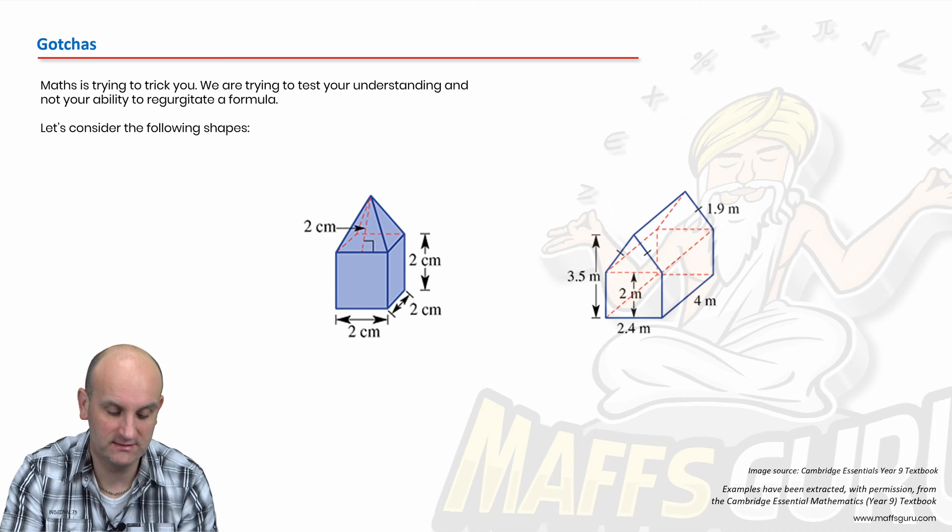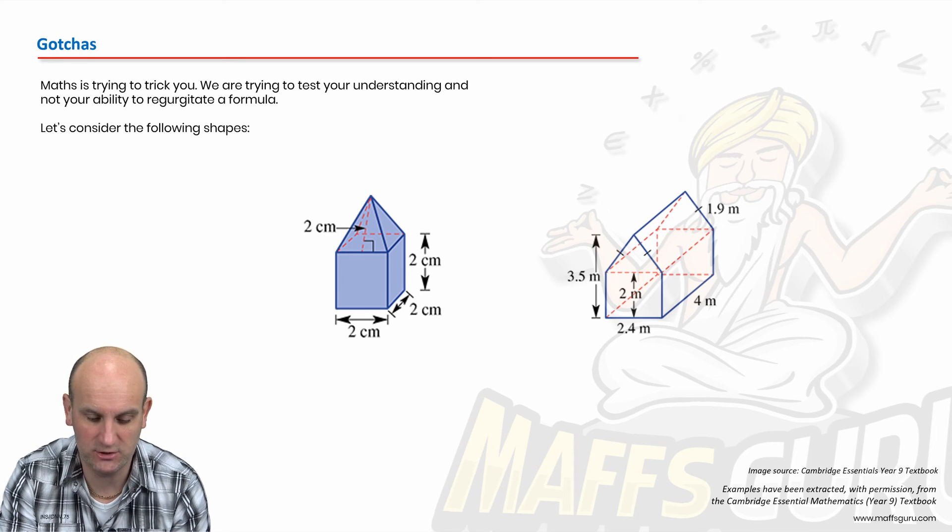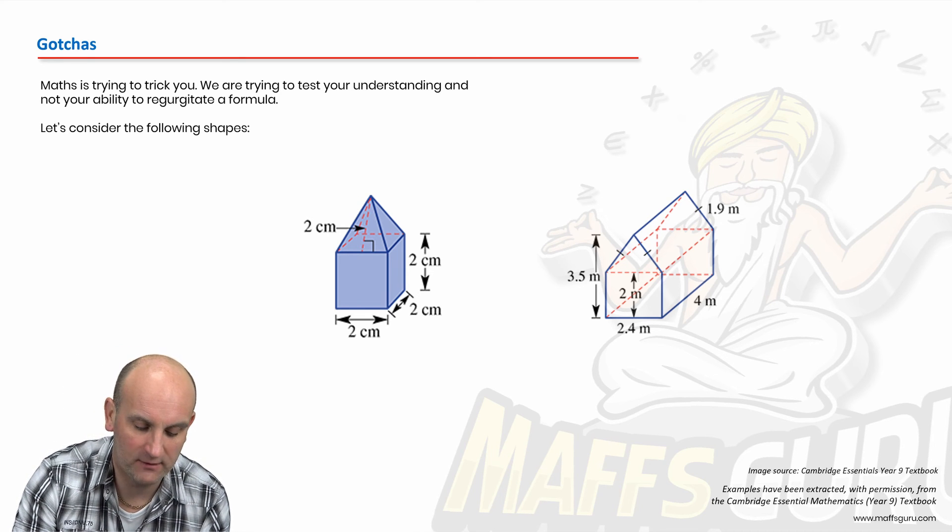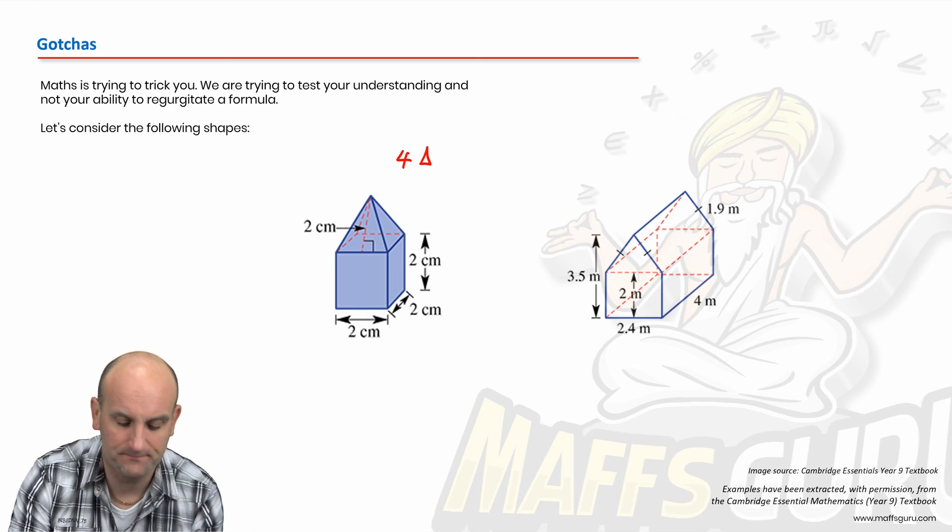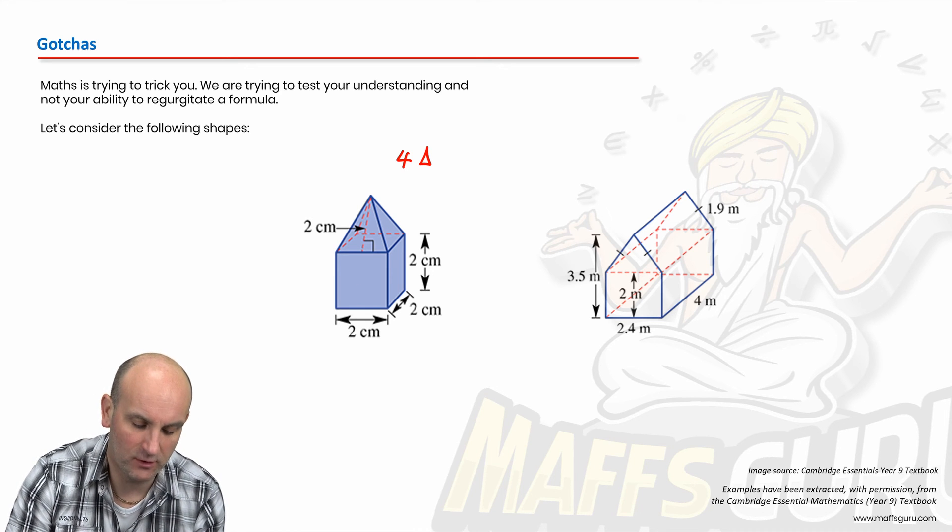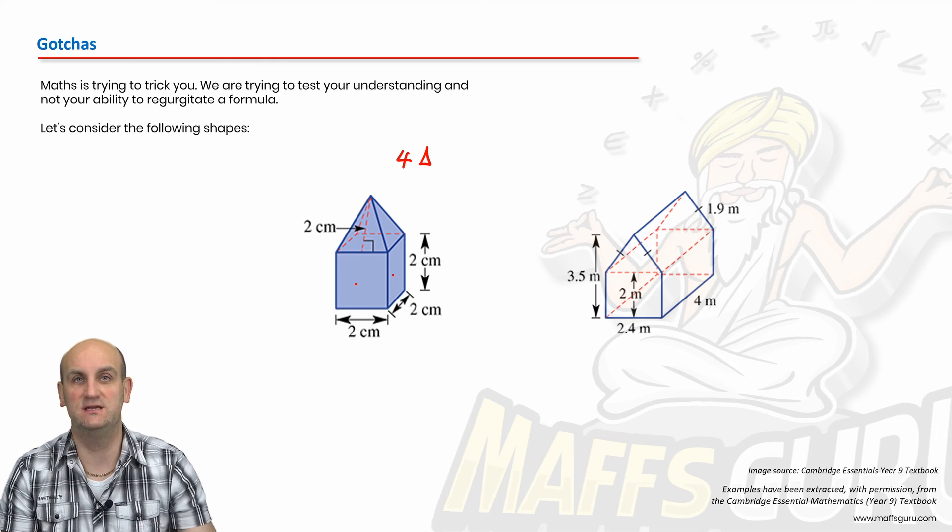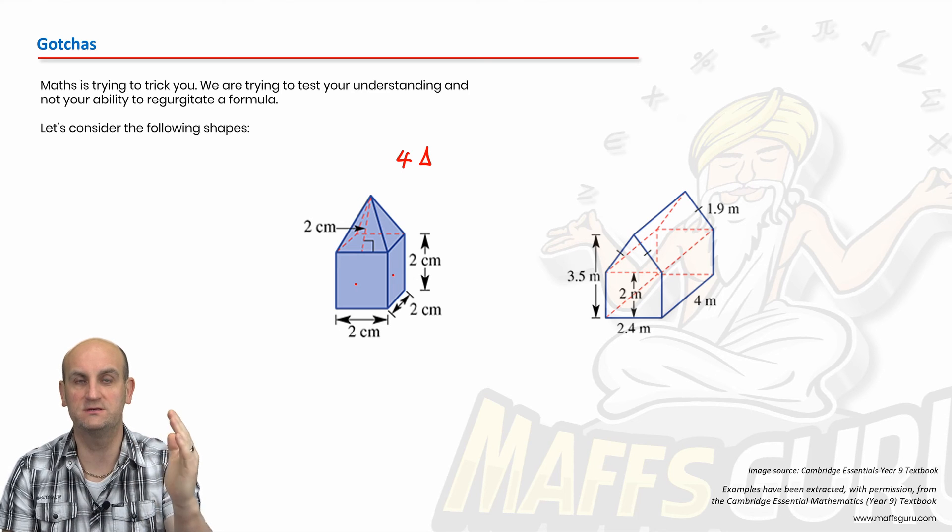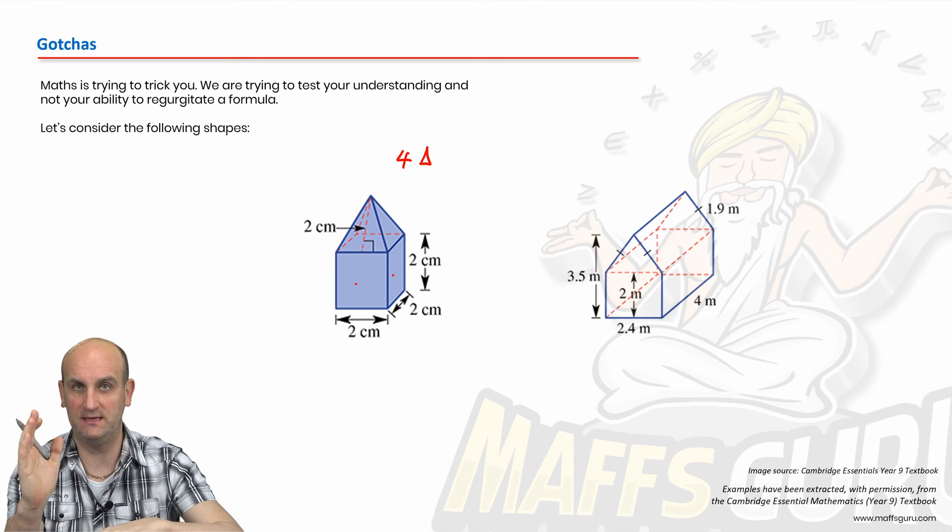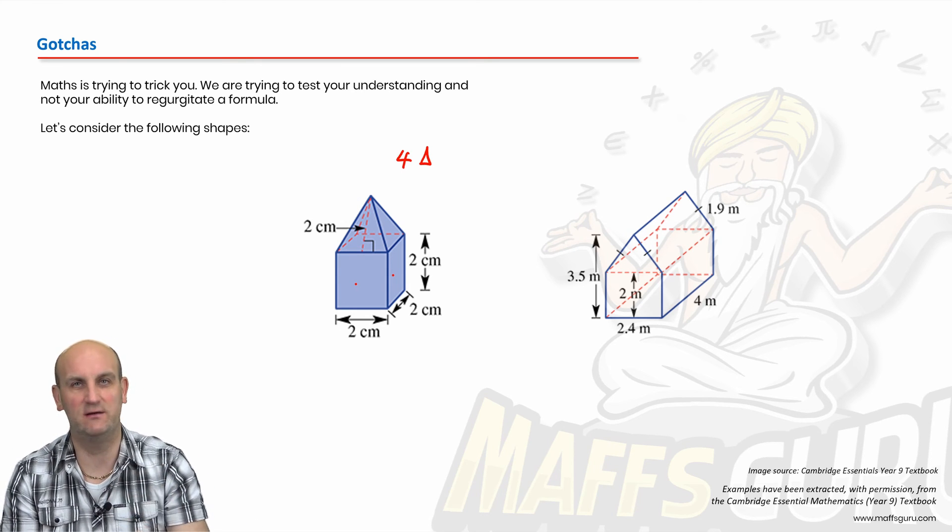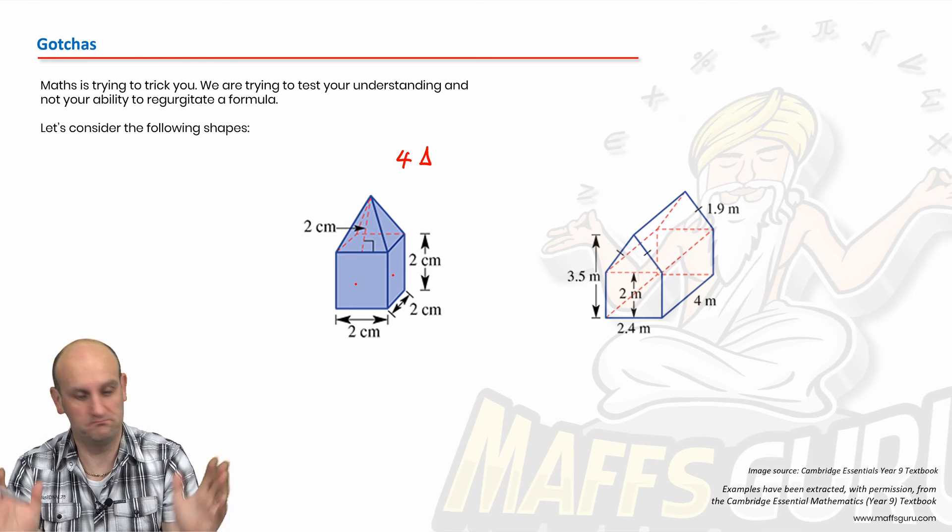It doesn't make any difference, it's not involved. So in this situation, I would actually find the area of four of the triangles and I would find the area of one, two, three, four, five sides of that cube because only five sides are showing: the front, the back, the side, the side, and the base. The base is still a surface area and some questions will ignore it.